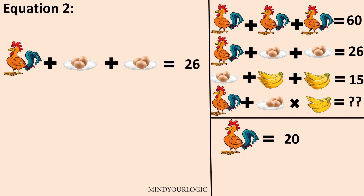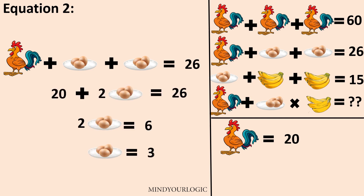In the second equation, we have 1 hen plus 3 eggs plus 3 eggs is equal to 26. Hen is equal to 20, so 6 eggs will be equal to 6, and 1 egg will be equal to 1.